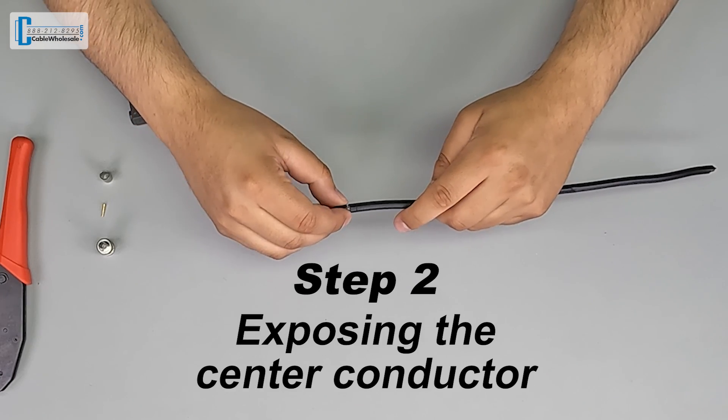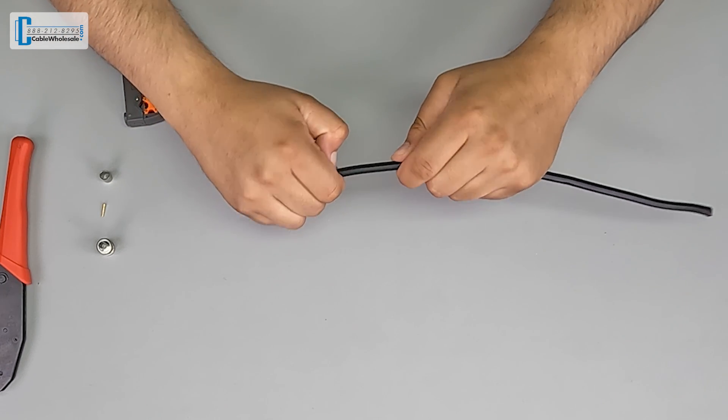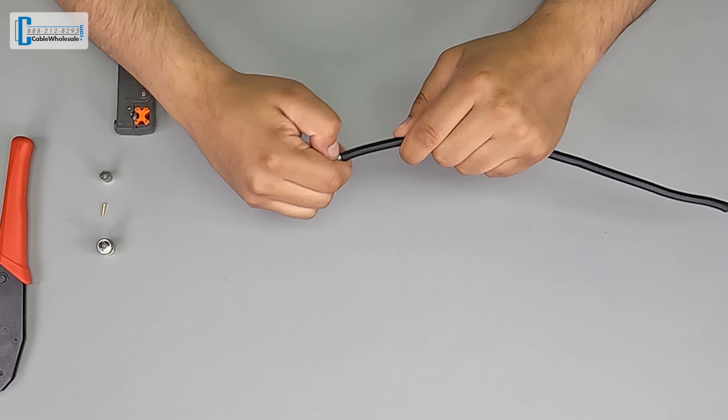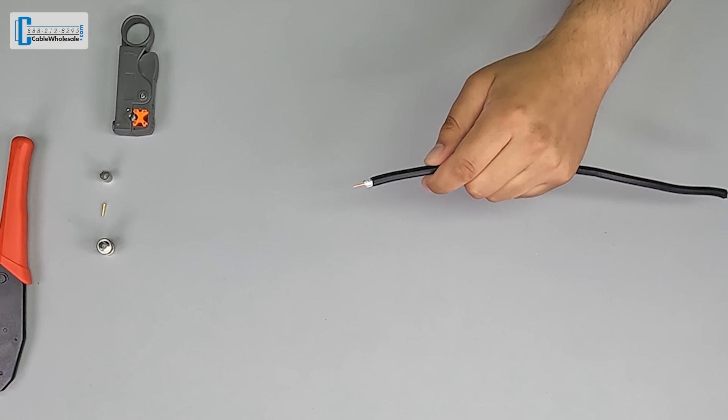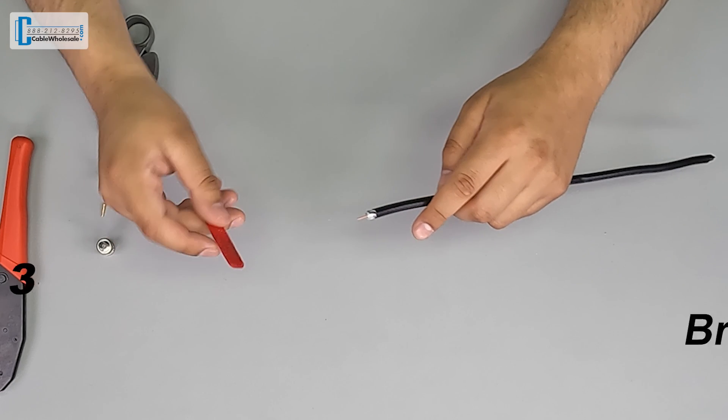Now for step two, we're going to expose the center conductor, and we'll remove the jacket at the second cut. Now for step three, we're going to grab a piece of velcro and brush the braid back down the jacket.